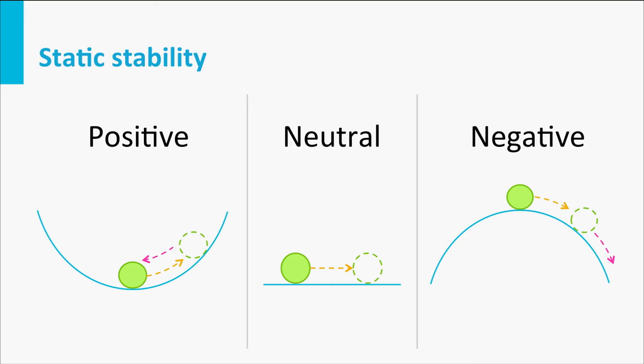With negative stability, deviation and reaction have the same sign. If they go to the right — let's call this positive — both the deviation and reaction are positive. If the deviation is negative and the reaction is also negative, this is also negative static stability. So: positive static stability means opposite sign and return to original position; negative means it gets worse.